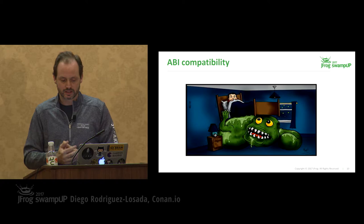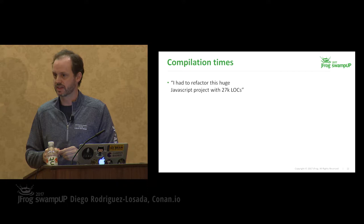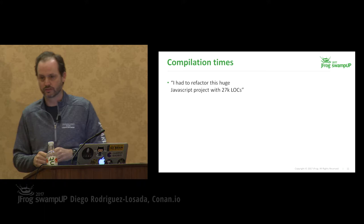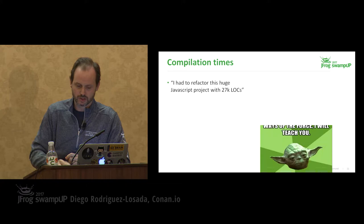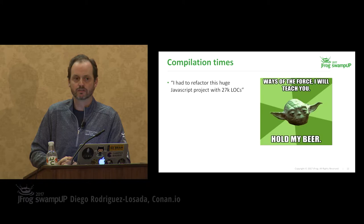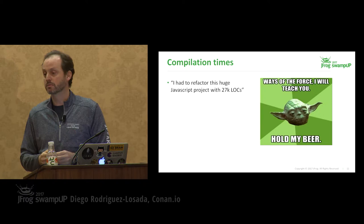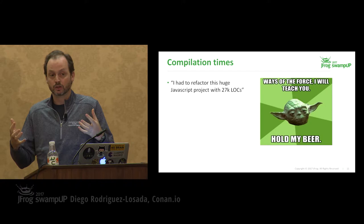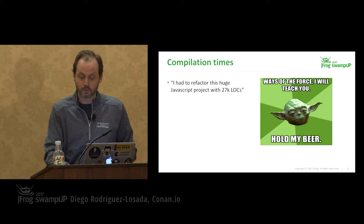I read a blog post where someone complained about refactoring a project of 27,000 lines of code. I ran a quick Twitter survey and the community said that "huge" starts at 10 million lines of C++. We definitely have to deal with huge codebases that compile for hours if we build from sources again and again. Other package managers for modern languages like Rust and Go don't have the ABI compatibility problem because they always build from sources, but they haven't scaled to our C++ project sizes. We really need to manage binaries and live with ABI incompatibility.